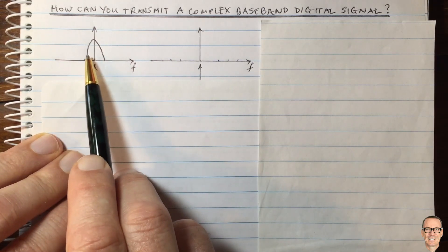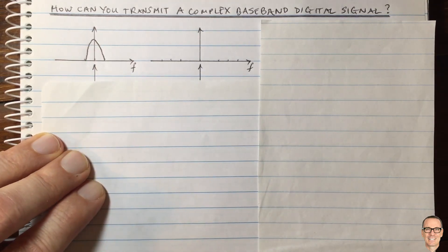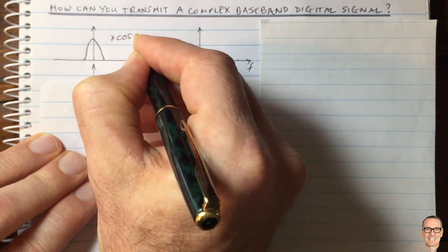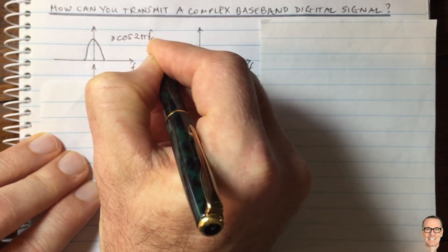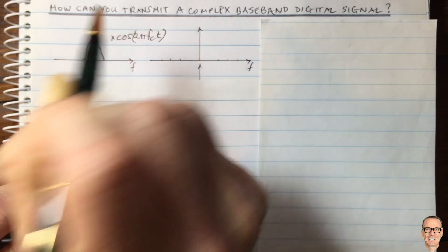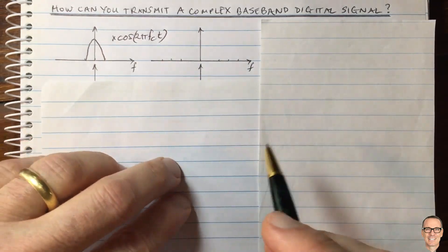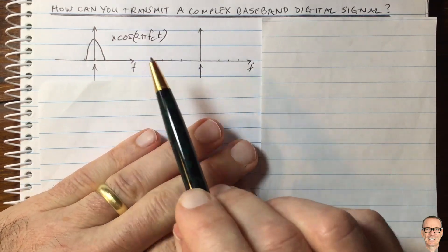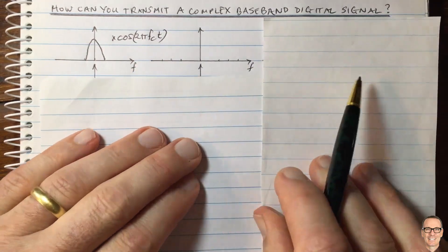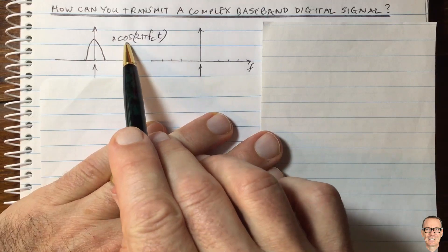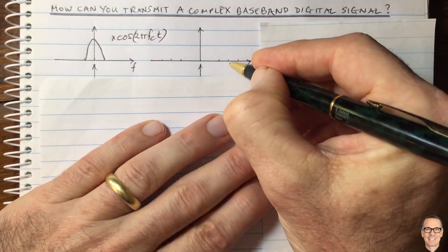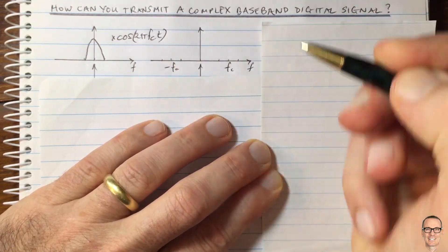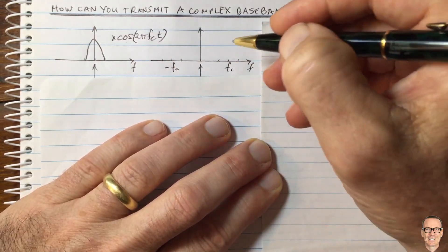If we want to transmit this signal, the most basic way to do it is to multiply it by a cosine waveform — cos(2π × carrier frequency × time). Multiplication in the time domain gives us convolution in the frequency domain, and the cosine has two spikes at the carrier frequency and the negative carrier frequency. For more information on this, there are videos linked in the description below.